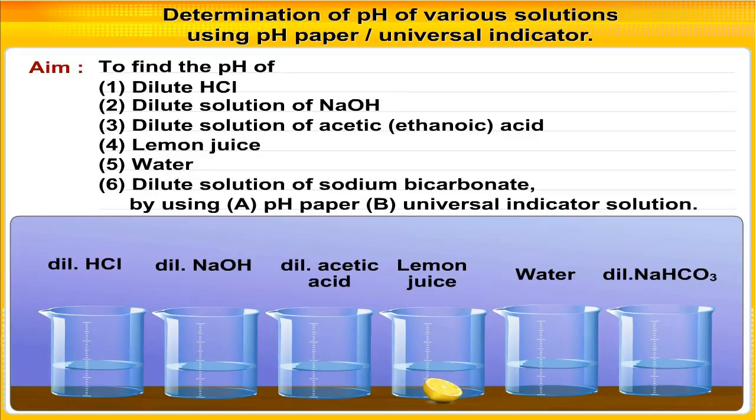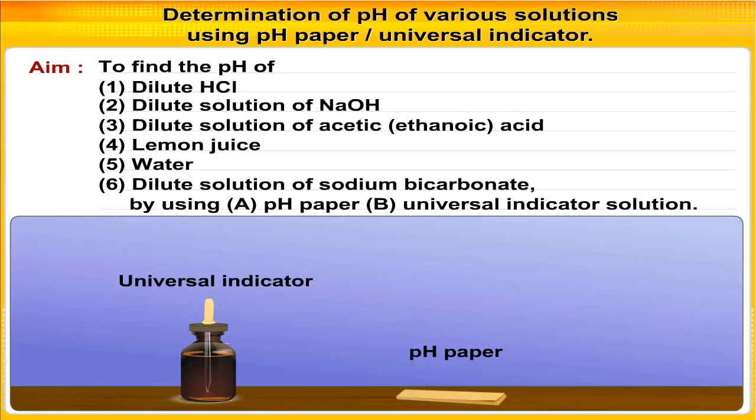Aim: To determine the pH of sodium bicarbonate solution by using A. pH paper, B. Universal Indicator Solution.